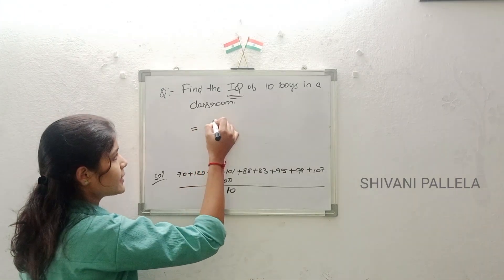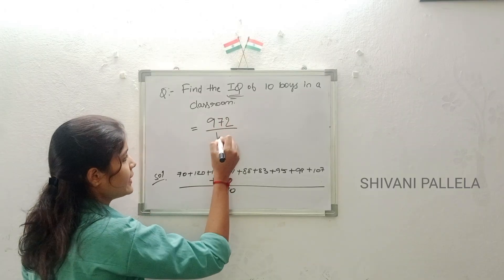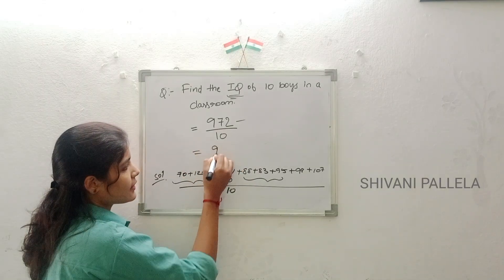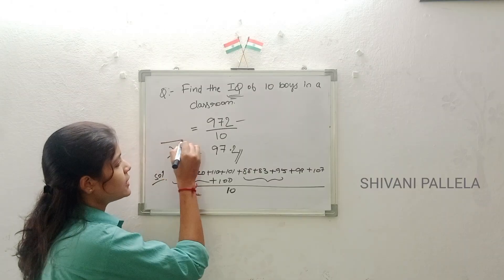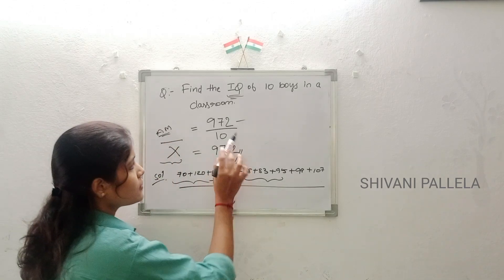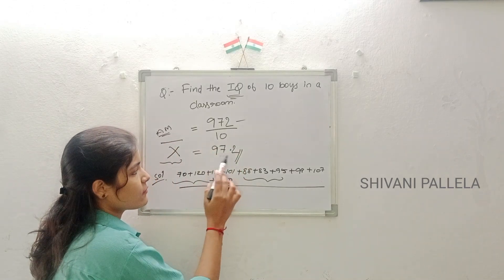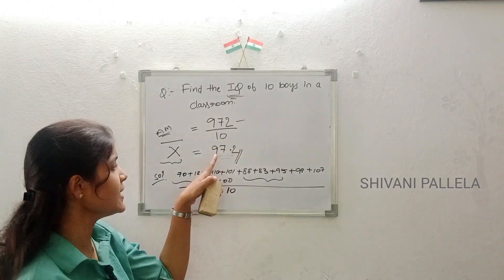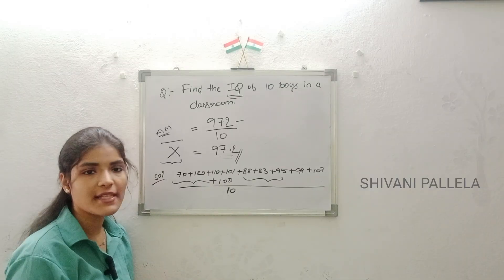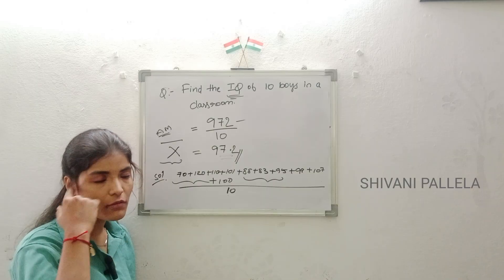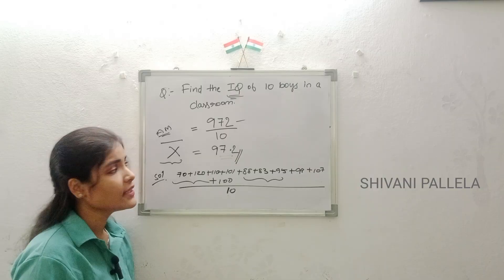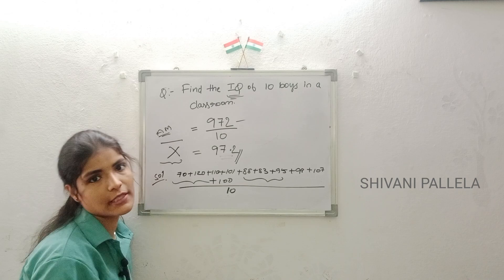After adding all these numbers you will get 972, divided by 10. So x̄ = 97.2. X-bar is nothing but the arithmetic mean. So the IQ of 10 boys in the classroom is 97.2. If they ask you to calculate arithmetic mean, you need to calculate the solution using direct method, indirect method, and shortcut method, covering individual, discrete, and continuous series.